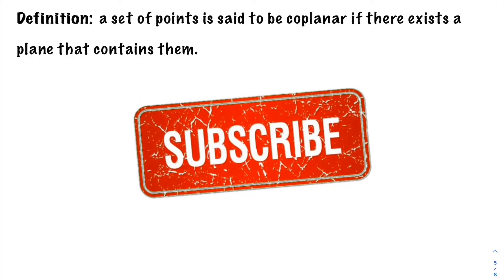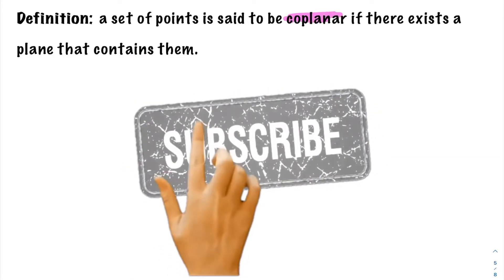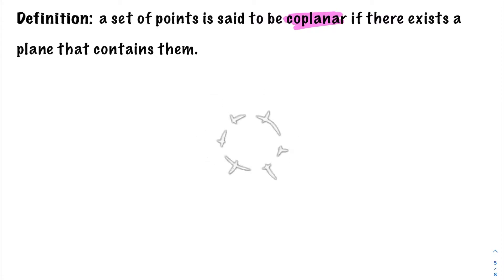We now want to take a look at a definition. The definition is for the idea of coplanar. A set of points is said to be coplanar if there exists a plane that contains all of these points.